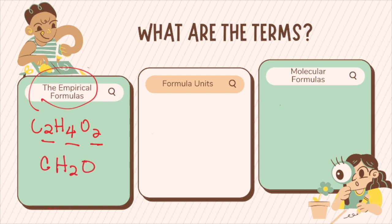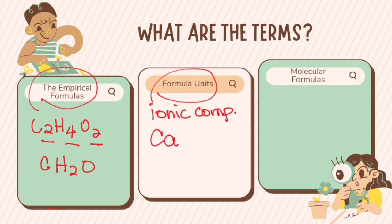CH2O is the empirical formula of acetic acid. Now, formula units are the formulas of ionic compounds and are almost always the same as the empirical formula. For example, calcium chloride is both the empirical formula and the formula unit for calcium chloride.